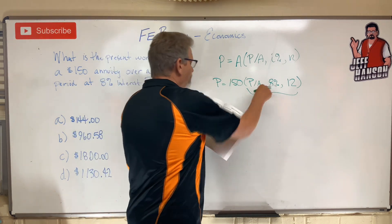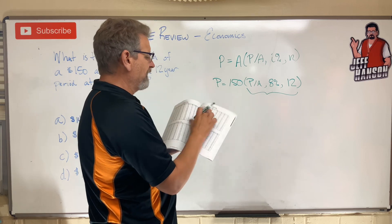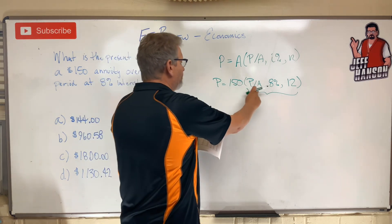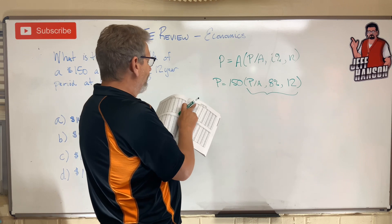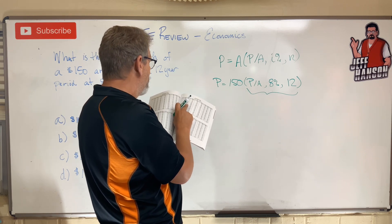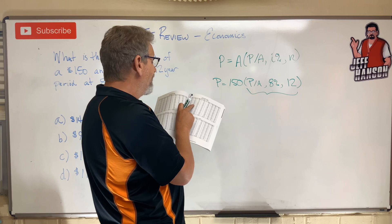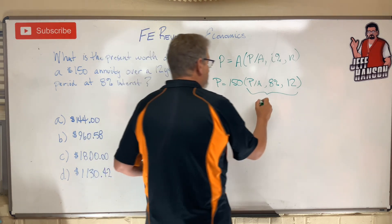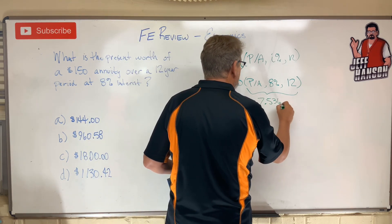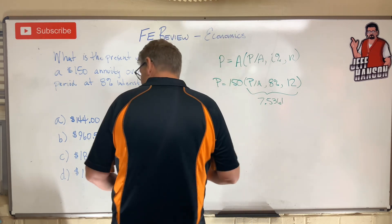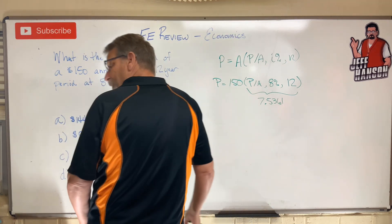There are the interest rate tables. I'm looking for the 8% table — there it is, 8%. I'm looking for the P given A column — there it is. I'm going to go down to line 12, and the factor on line 12 is 7.5361.